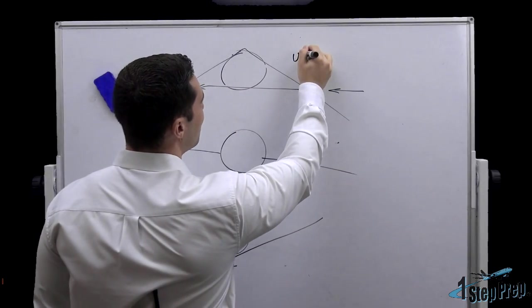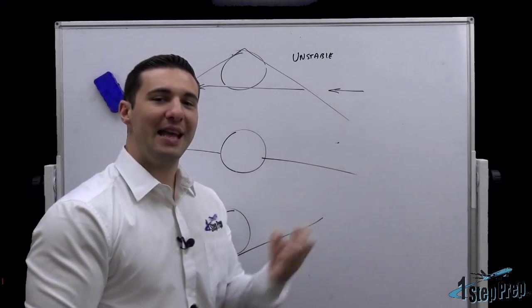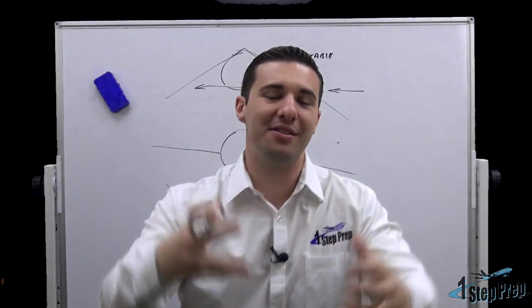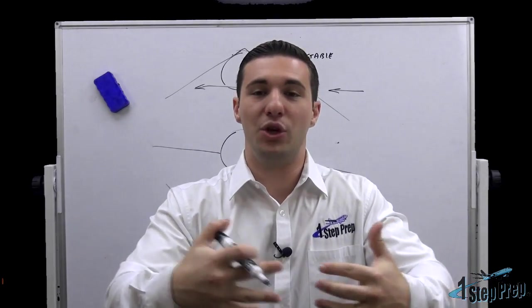This is said to be unstable. And sometimes it is necessary for manufacturers to put anhedral into the wing design. Why? Because, perhaps, they have no wing sweep.